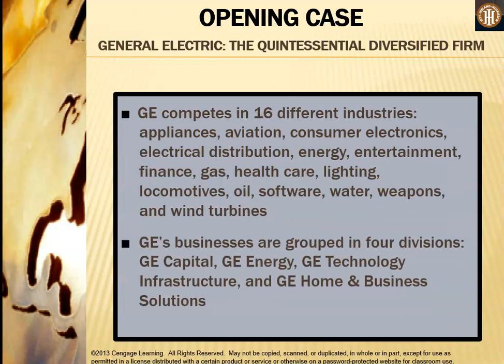The opening case in the 12th edition of the textbook talks about General Electric. GE competes in 16 different industries: appliance, aviation, consumer electronics, electrical distribution, energy, entertainment, finance, gas, healthcare, lighting, locomotives, oil, software, water, weapons, and wind turbines. As we can see, that is a lot of different industries.